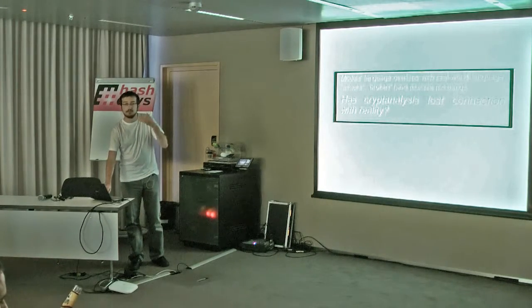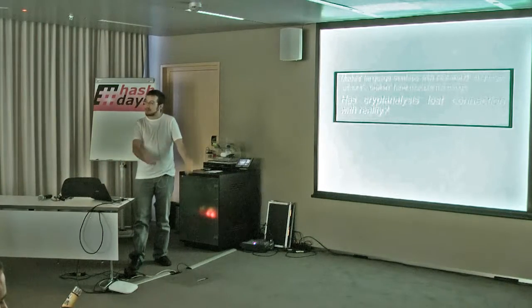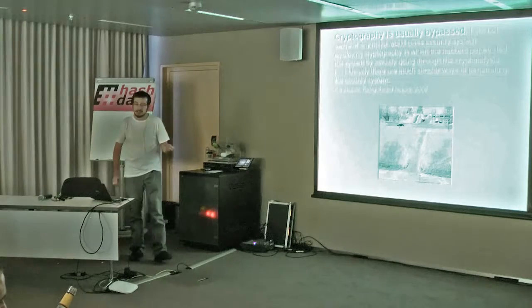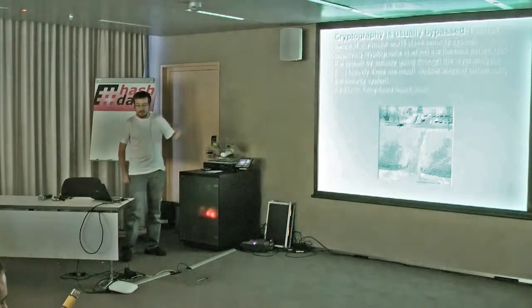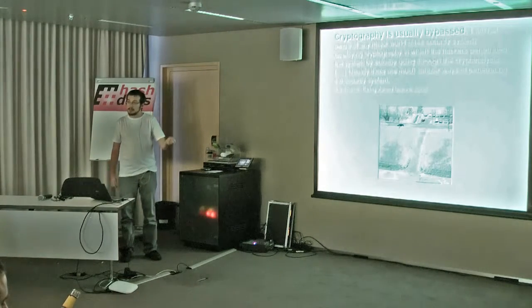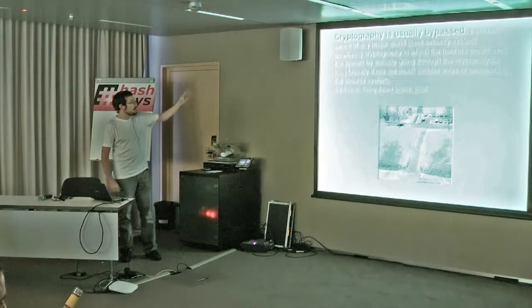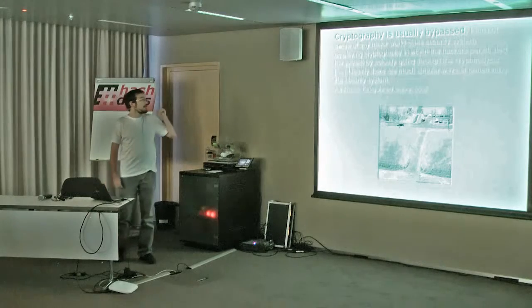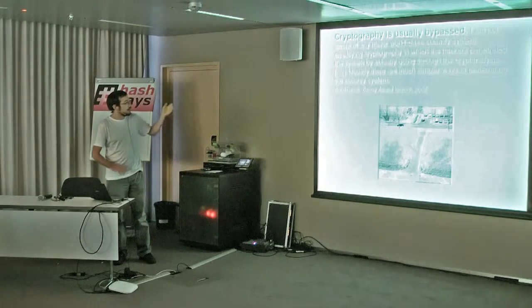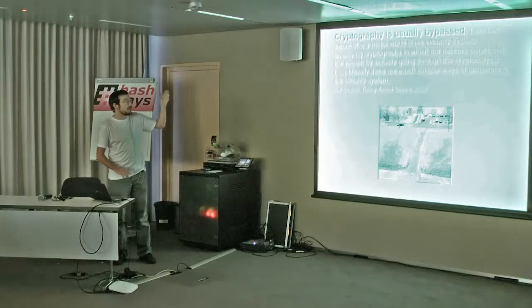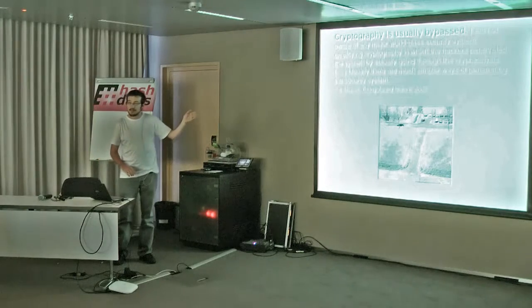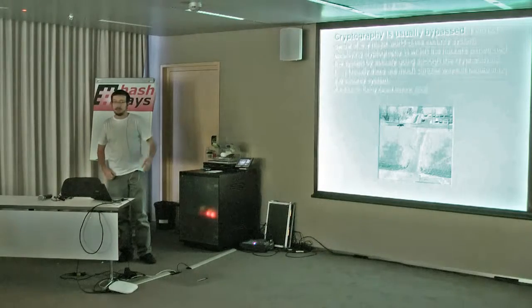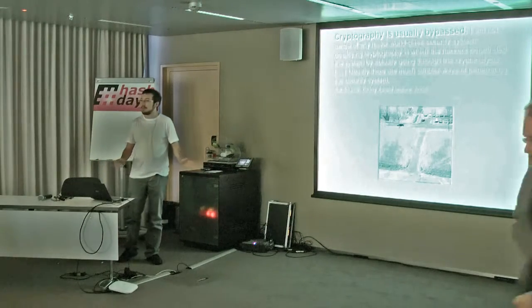Because if you look at people who do real-world stuff like pen testing, you see that crypto is usually bypassed. That's something Adi Shamir — who is a crypto guy — recognized. It finishes by saying there are much simpler ways of penetrating a security system: you can forge a malicious PDF, send it to an employee, and you're done.